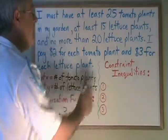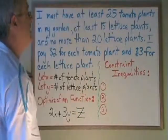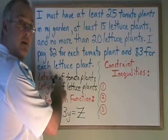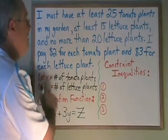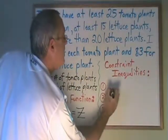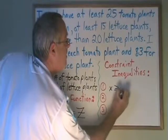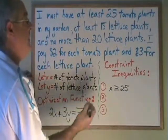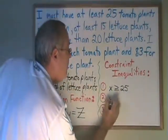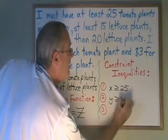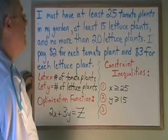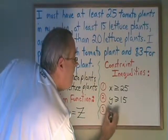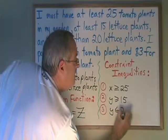The constraint inequalities are all of the other numbers. At least 25 tomato plants — since tomato plants are expressed in x — gives us x greater than or equal to 25. At least 15 lettuce plants gives us y greater than or equal to 15. And no more than 20 lettuce plants gives us y less than or equal to 20.